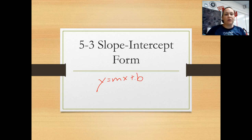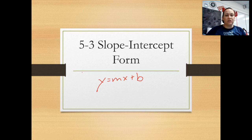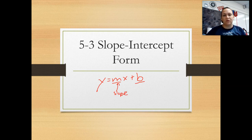In slope-intercept form, the x and the y will stay as letters, just like they did in point-slope form. And then what we need to do — our job — is to figure out what is the m and what is the b. The m stands for slope, which we've been working with this whole time, because slope was our very first lesson for this chapter.